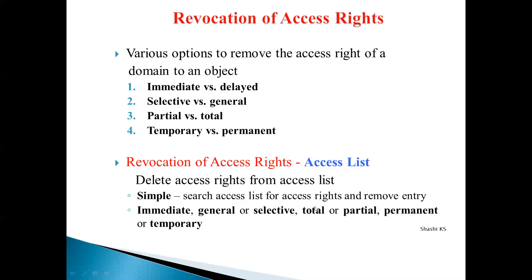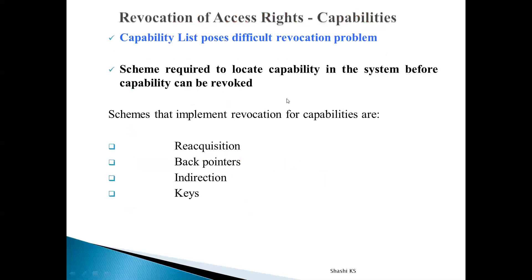Revocation is immediate in the access list implementation — it happens immediately after taking the decision. It can be general or selective, total or partial, permanent or temporary — that is left to the object owner or the protection system of the operating system. The second method is revocation of access rights when using a capability list to implement the access matrix.